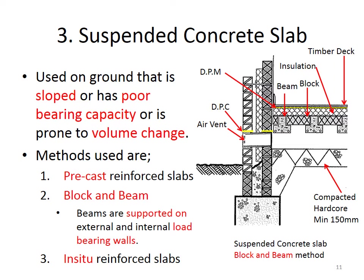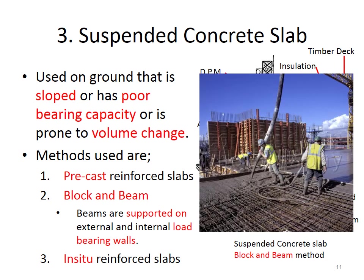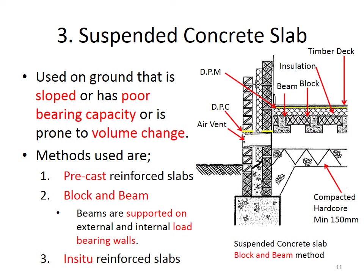The third type of suspended concrete slab is the in-situ reinforced slab. Reinforced mesh is put in place, supported by formwork made of timber or steel underneath and up the sides, and then concrete is poured fresh on top. There are three types of suspended concrete slabs in total.